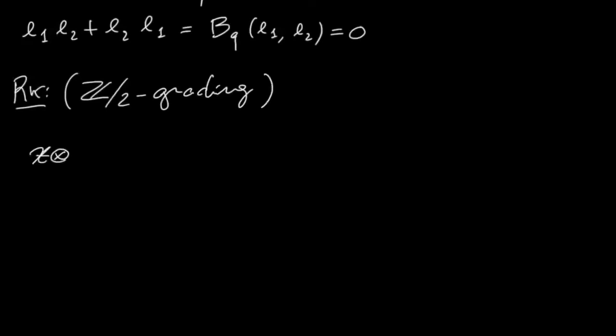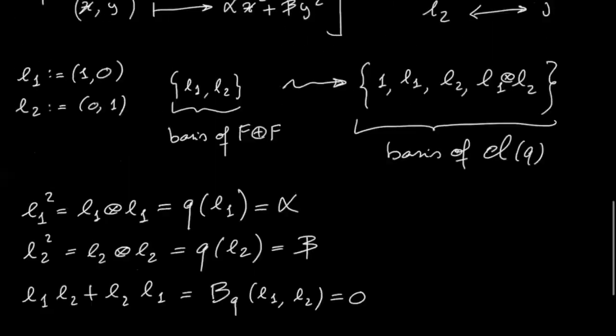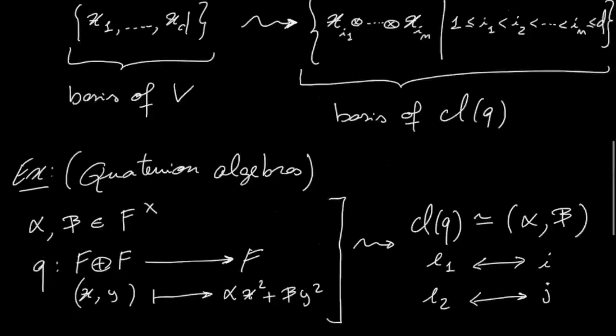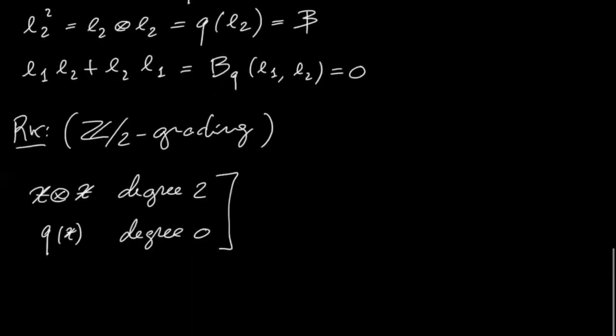Because this element here is of degree two, this element here is just a scalar, so it's of degree zero. So when you go to the definition of your Clifford algebras, so the tensor algebra is actually n graded, but this two-sided ideal is not homogeneous, but these elements have the same parity, so we actually get a Z2 grading on the Clifford algebras.